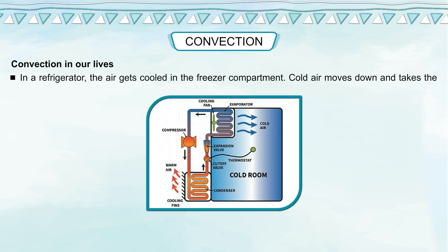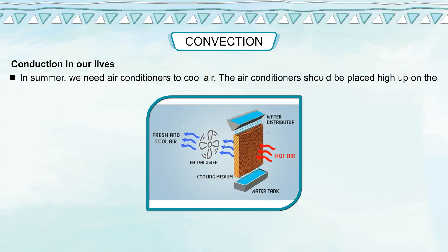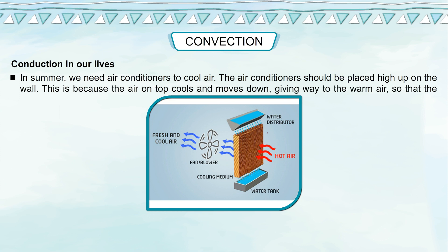Convection in our lives: In a refrigerator, the air gets cooled in the freezer compartment — cold air moves down and takes the heat from the lower compartments, then gets warmer and rises up again. Room heaters are kept on the floor — the air near the heater heats up and rises, forcing cool air to move down, setting up a convection current. Air conditioners should be placed high up on the wall, because the air on top cools and moves down, giving way to warm air so that the entire room cools.